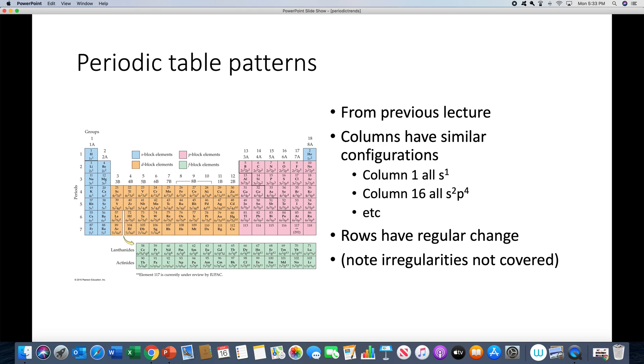As you go across a row, you can see that there's a regular change. So for example, as we did when we were looking through configurations, lithium, beryllium, boron are 2S1, 2S2, 2S2 2P1, continuing on to carbon S2P2, and so on.